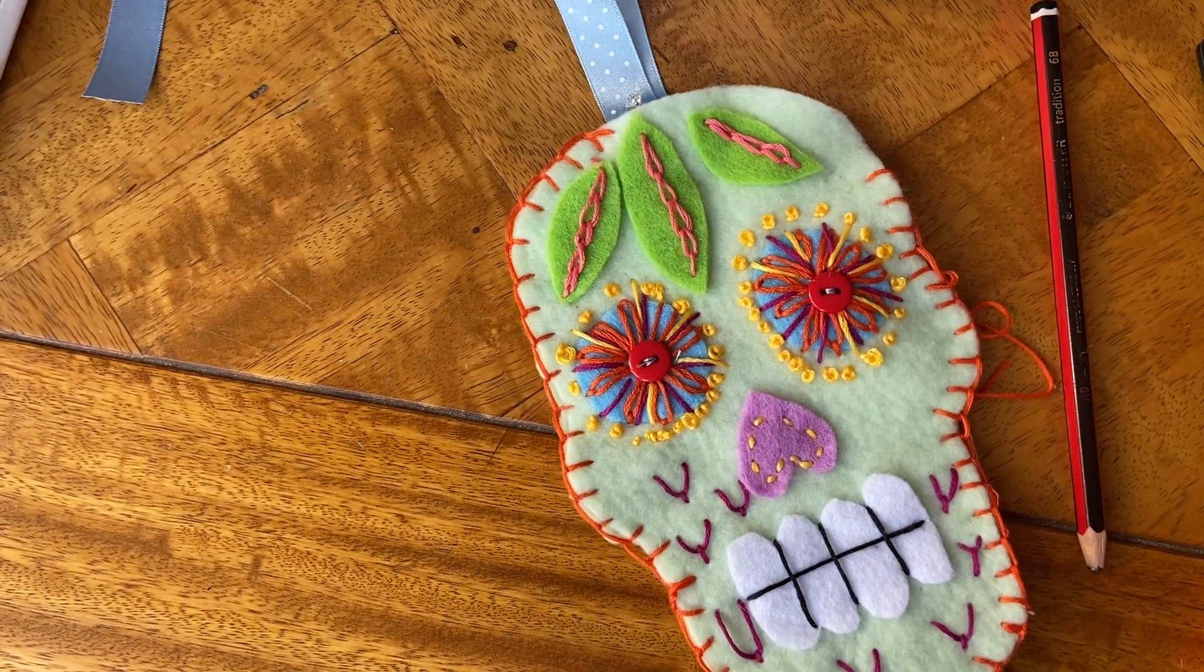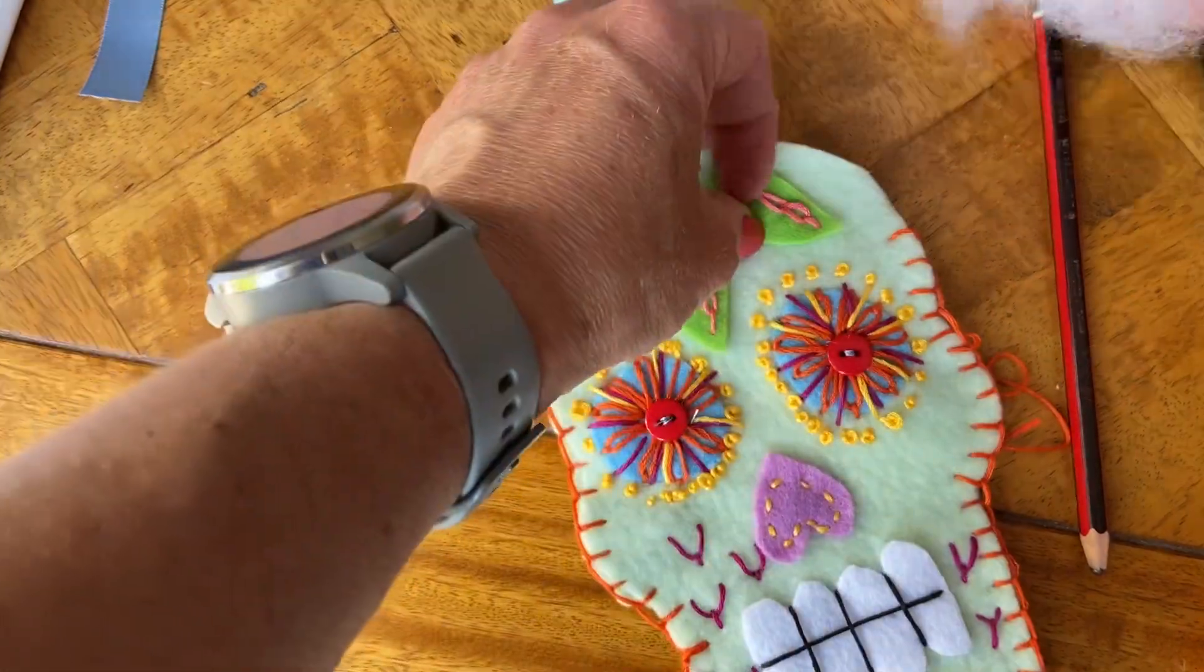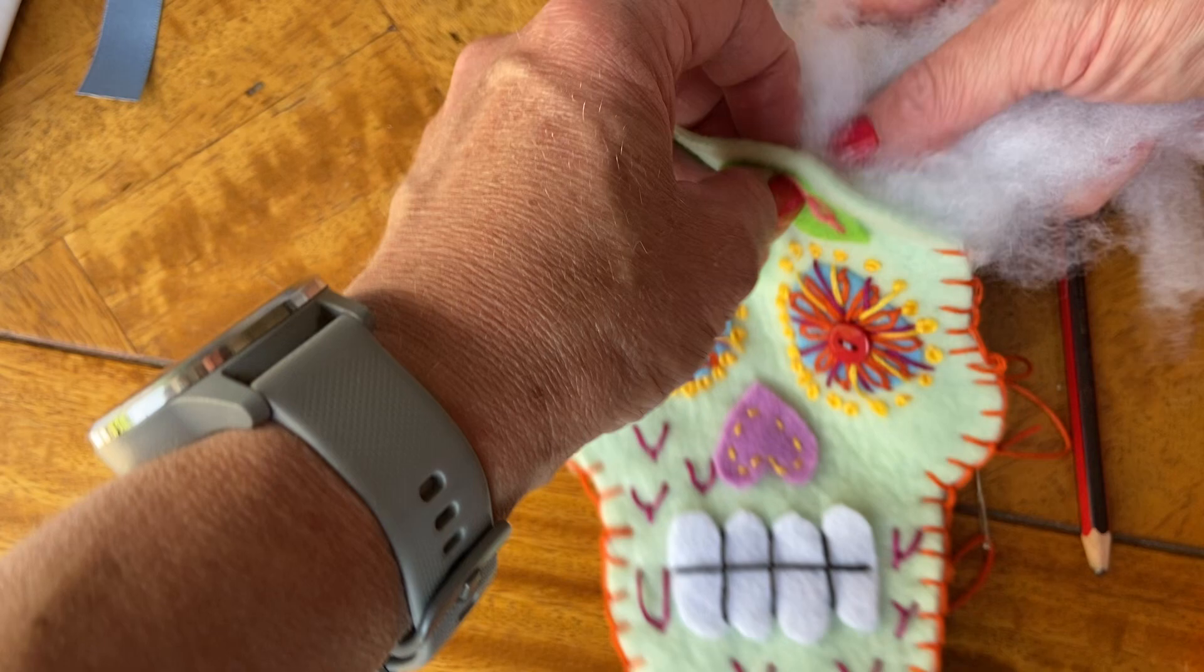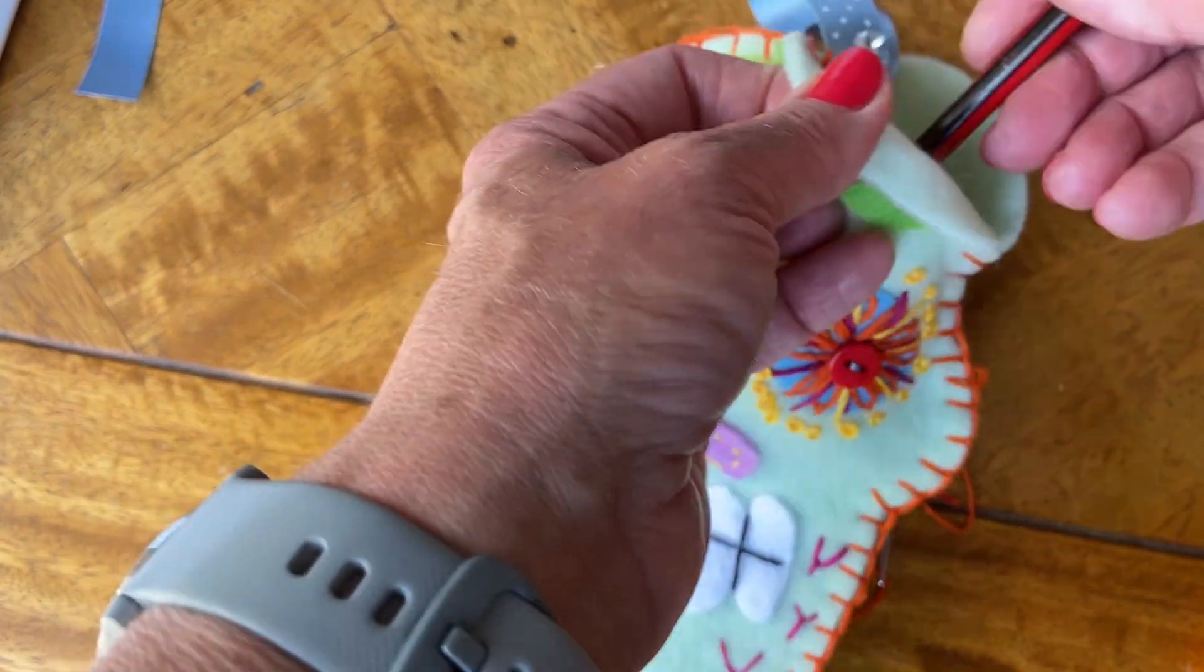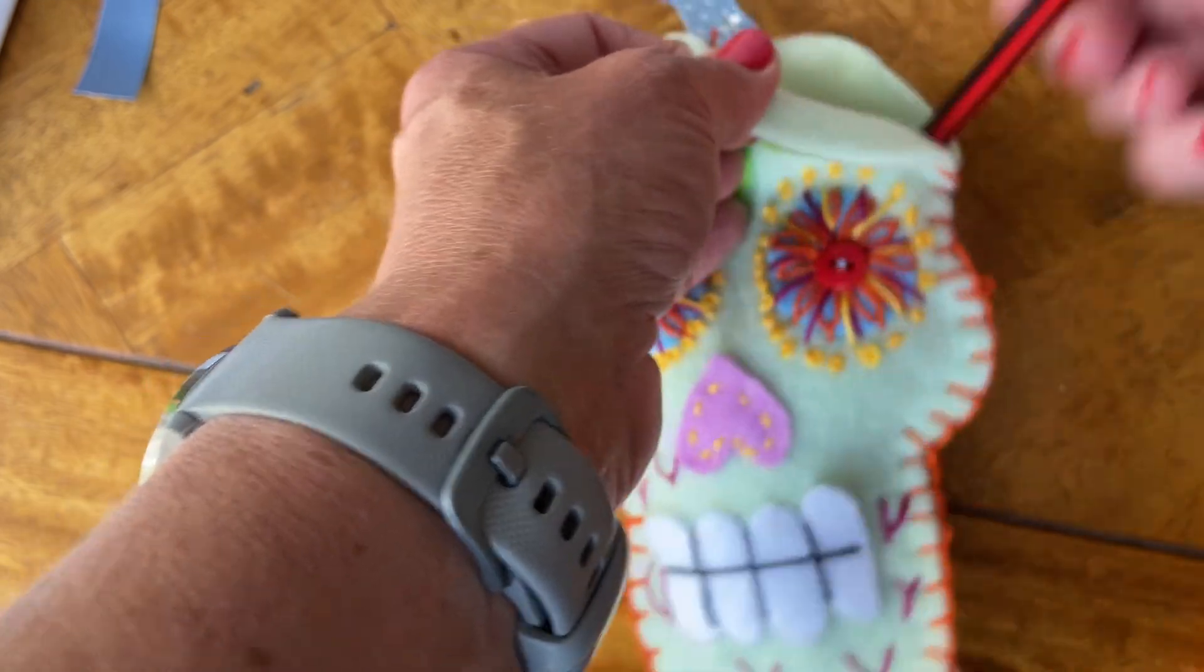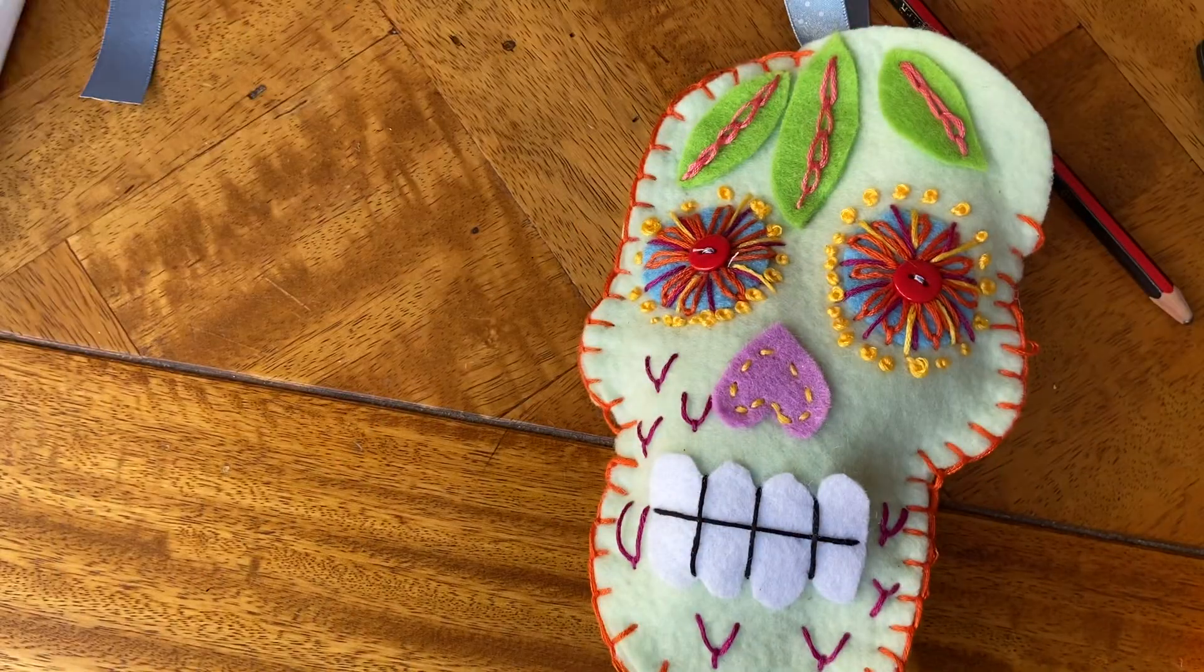You're then going to get yourself some fluffy stuffing, and this is where we make our sugar skull into a 3D piece. We're just going to push the stuffing in like so, and you just use a pencil or a pen just to push the stuffing in.